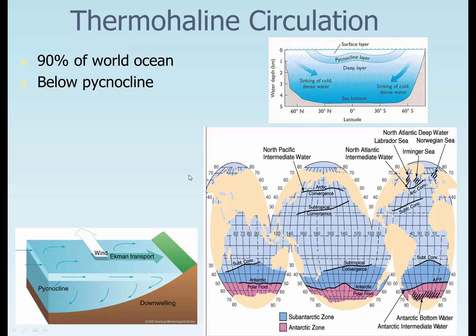It is located below the pycnocline — the pycnocline is where we actually get a sharp density difference. We don't get those at the poles because the water is cold up and down, but we do get that close to the equator. It is dependent on temperature and salinity. Temperature is probably the biggest thing, and 4 degrees Celsius water is what we're going to find at the bottom.